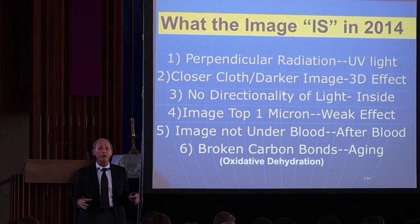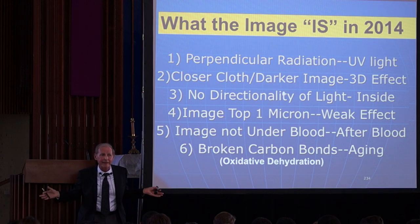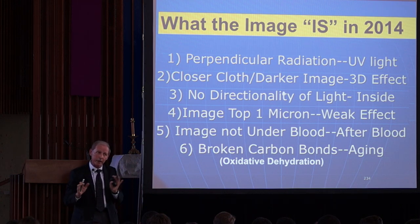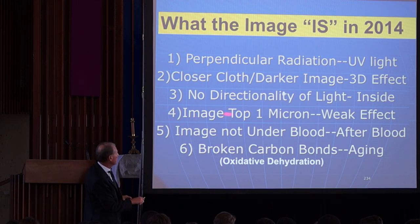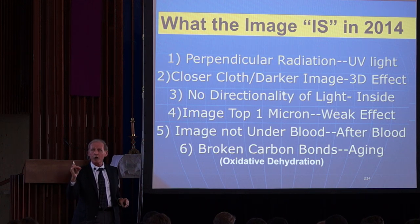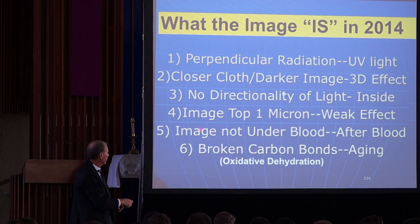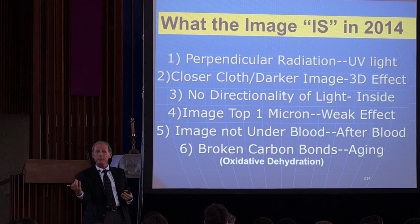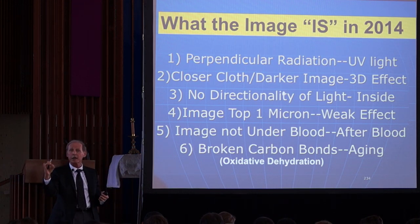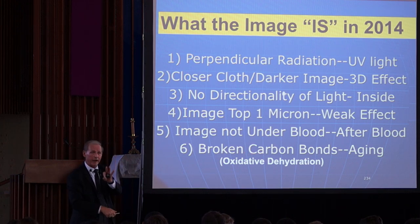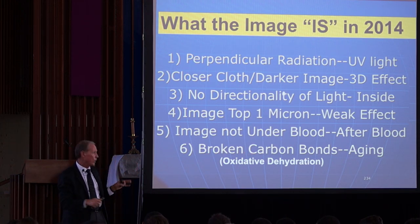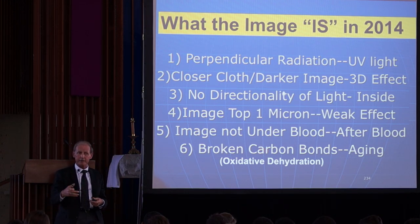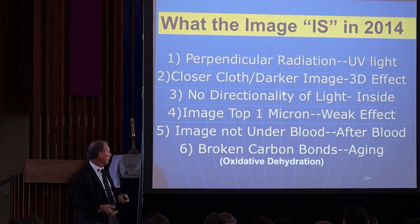This light doesn't have directionality. This light looks as if it came from inside of the body out. The energy came from inside the body. The image is weak — it doesn't burn the cloth, it only hits the top fibrils. The image is not under the blood, which means first the blood was on the cloth, and second the image happened after. The weak energy couldn't penetrate blood. The energy broke the carbon-carbon molecule bonds that make up a carbohydrate molecule by oxidizing it, making it look more aged than it really was.